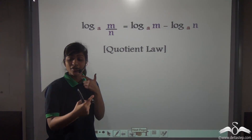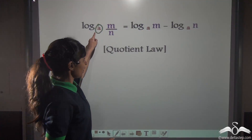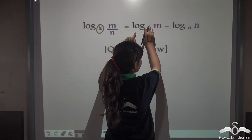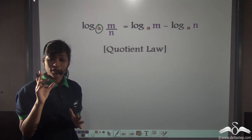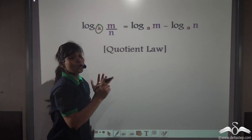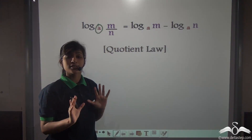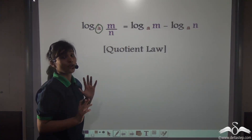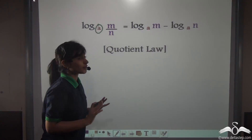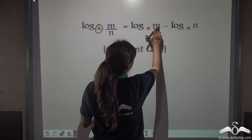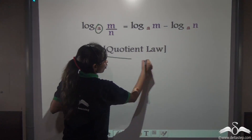We have another law that changes division to subtraction. If you have log of M by N to the base A, it can be solved by finding out log of M to the base A, then log of N to the base A, and subtracting log N base A from log M base A. Notice we are keeping the base the same — don't forget to write the base, because if you forget, your answer will be wrong. Remember that A is always a positive real number. Log of M by N to the base A equals log M base A minus log N base A. This is known as the quotient law.